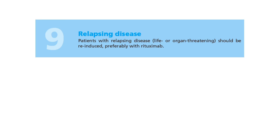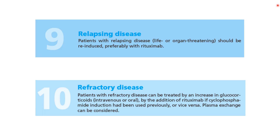For relapsing disease, treat with re-induction; rituximab is preferred over cyclophosphamide in the relapse setting. For refractory disease, increase the glucocorticoid dose, switch to rituximab if cyclophosphamide was used for induction (or vice versa), and also consider plasmapheresis.